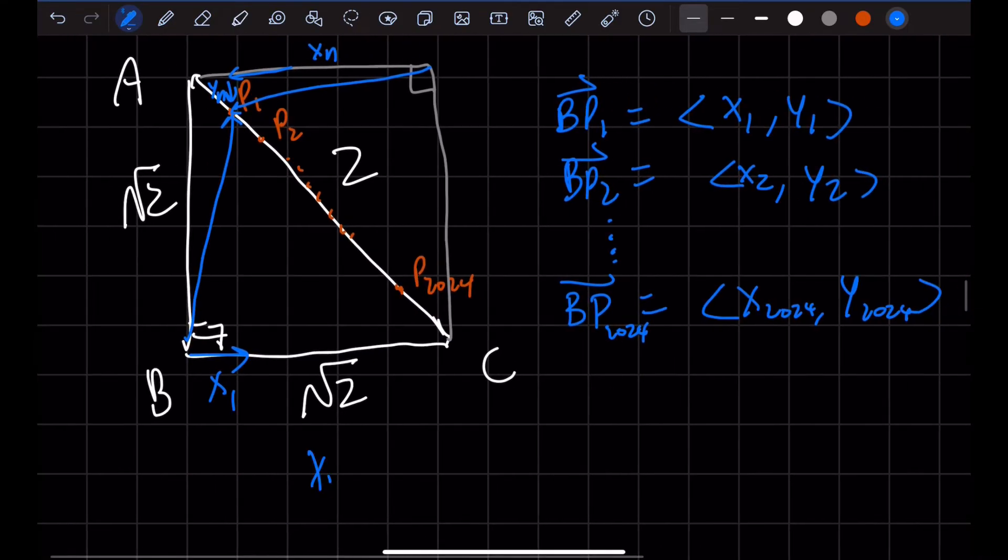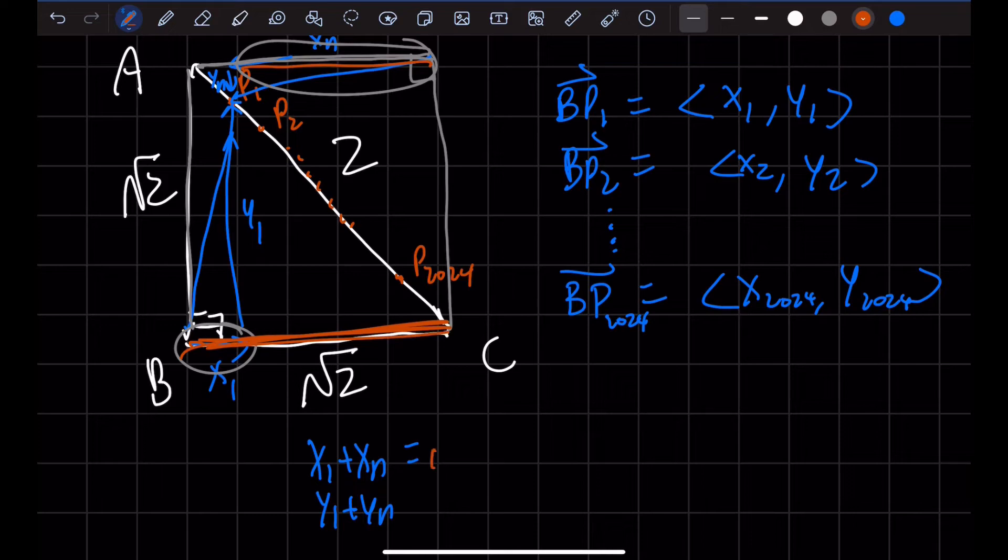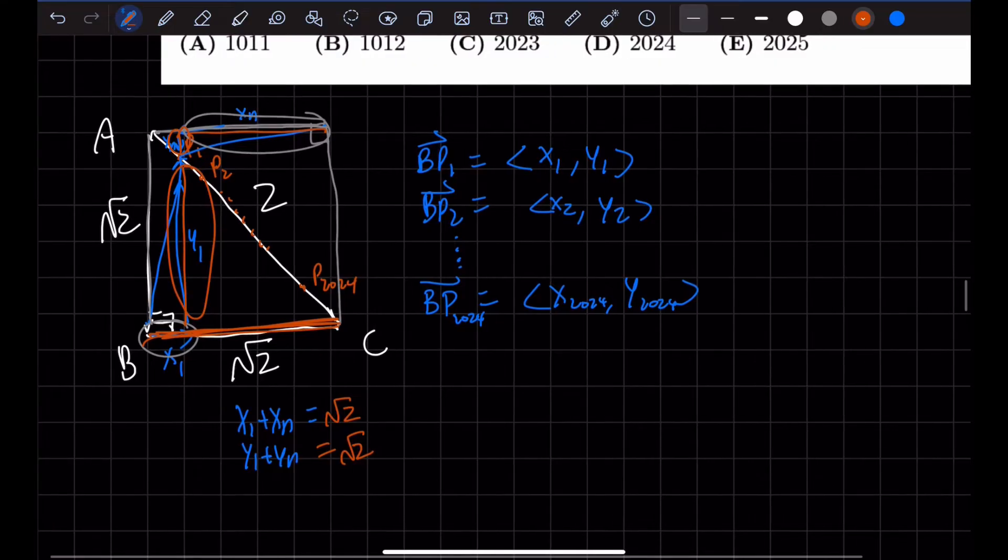Well, we see that when we add up X₁ plus Xₙ here, and then Y₁ plus Yₙ, this is just the length of this square that we made. X₁ plus Xₙ, X₁ here, Xₙ here, would be the total length of this whole side right here. So this would be √2. Y₁ plus Yₙ here would also be √2. So that's a really cool property.